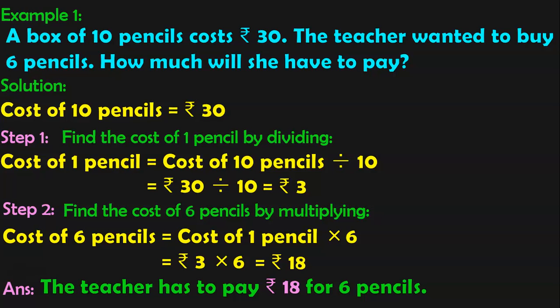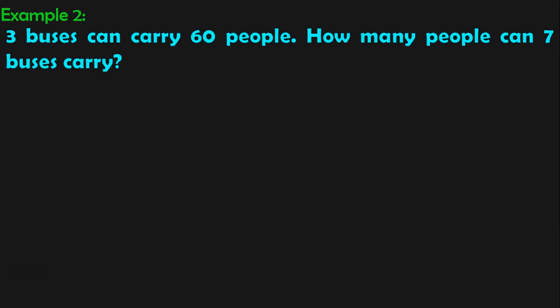Hope you have understood how we do the Unitary Method. First, you find the cost of 1 item by dividing. Then, you find the cost of many items by multiplying. Let us do more examples now. Example 2: 3 buses can carry 60 people. How many people can 7 buses carry?